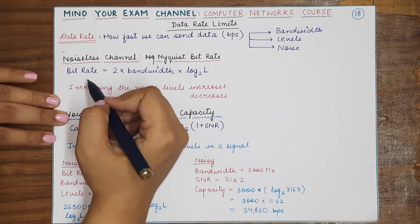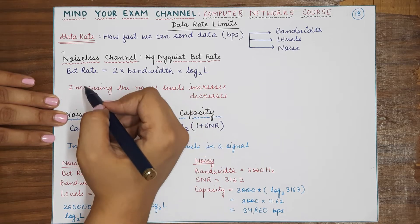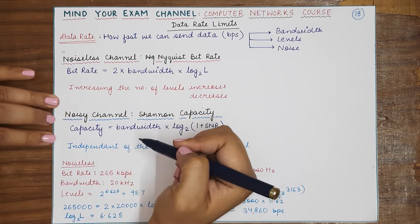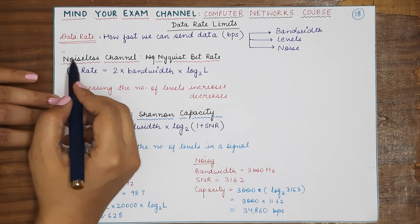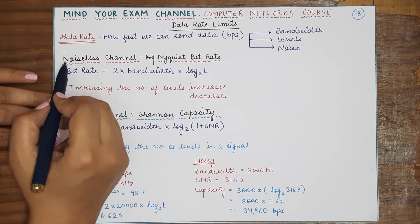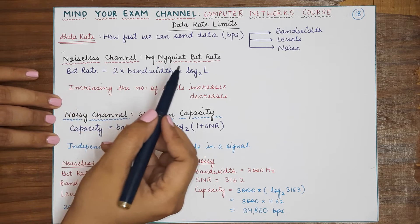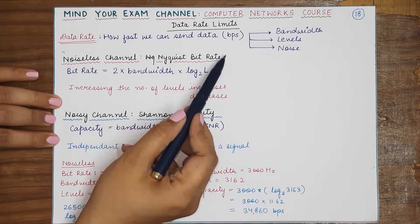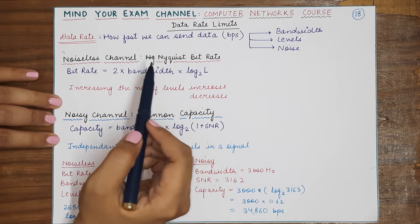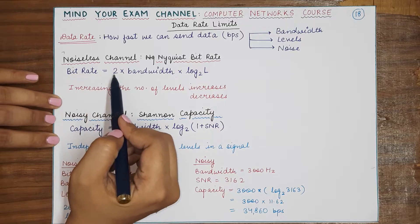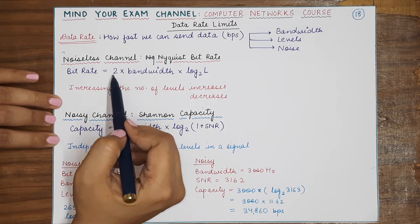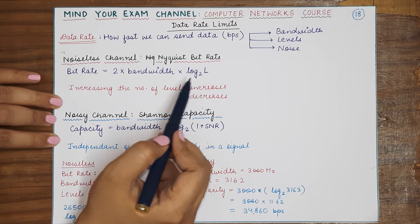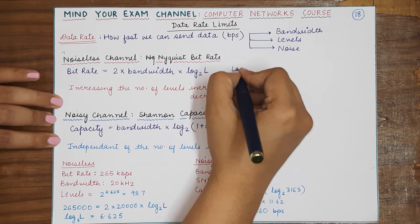In this video we will see for a noiseless channel what is the formula for achieving a theoretical maximum value of the bit rate, and same goes for a noisy channel. Starting with noiseless channel, there is a formula which is given by Nyquist and it is known as the Nyquist bit rate. The bit rate in a noiseless channel is calculated by the formula: 2 × bandwidth × log L base 2, where L is the number of levels that are present in a signal.